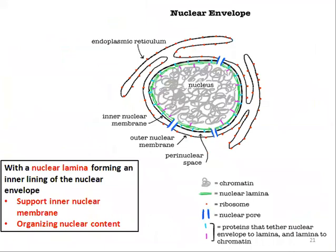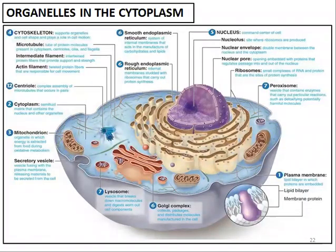To conclude on the nuclear envelope: there is the outer membrane and the inner membrane. The green lines represent the nuclear lamina. What is the nuclear lamina? It forms an inner lining of the nuclear envelope, attached to the inner membrane. Its role is to support the inner nuclear membrane and to organize nuclear content.